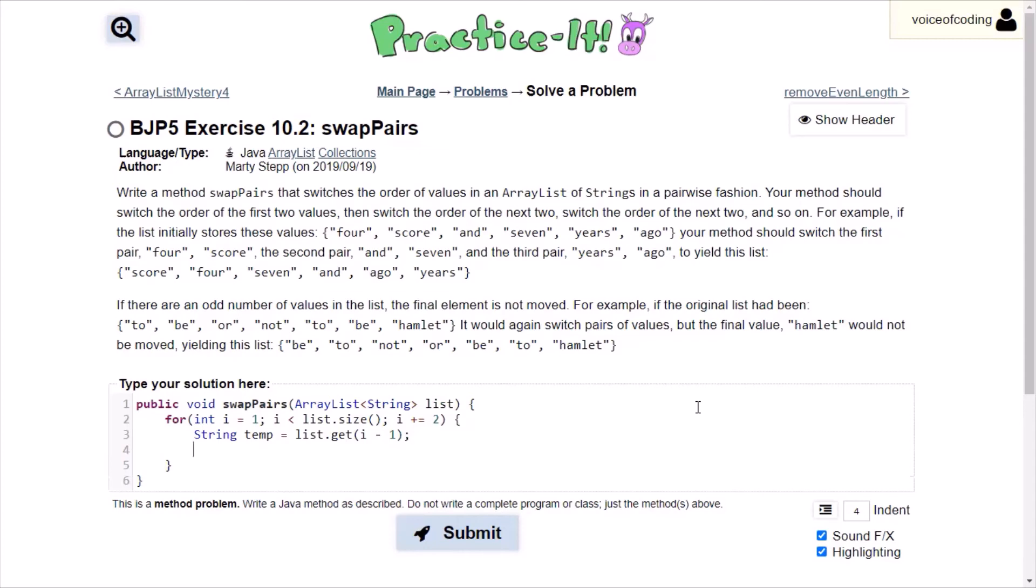All that's left is just to swap the two terms. So we'll be doing list.set i minus 1 because we're going to be swapping the first term first. And then we're going to set that equal to list.get i, which is the second term.